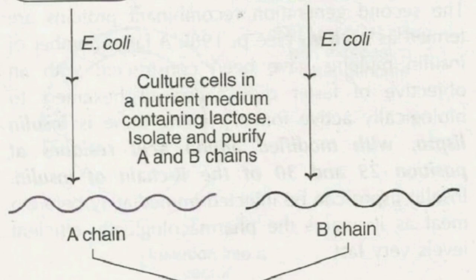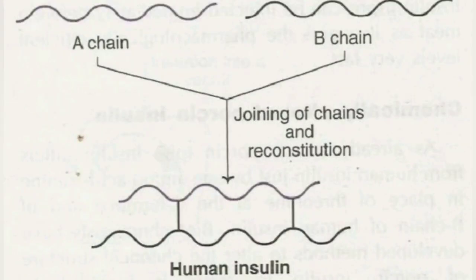These E. coli cells are cultured in a nutrient medium containing lactose. The presence of lactose in the culture medium induces the synthesis of insulin A and B chains in separate cultures. These insulin A and B chains can then be isolated, purified, and joined together to give a full-fledged human insulin.